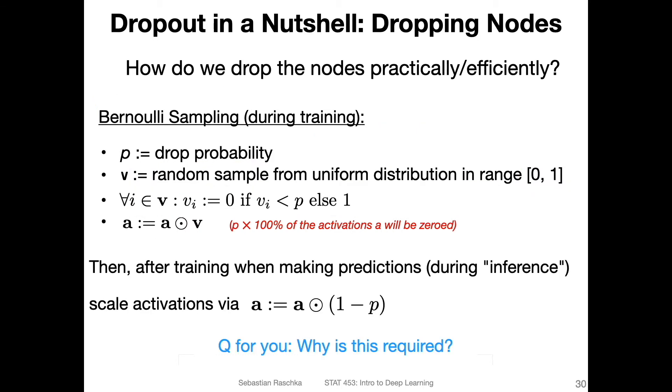But there's one thing we have to adjust when we want to use our model for inference—making predictions on new data or computing test set accuracy. We don't want any randomness when we make real-world predictions. It would be awkward if we predict credit scores but sometimes random nodes get dropped, so customers would on different days get different credit scores although nothing else has changed. Dropout is only applied during training.